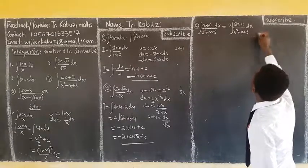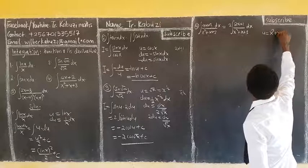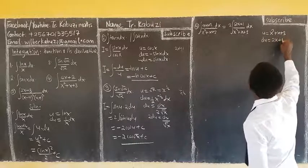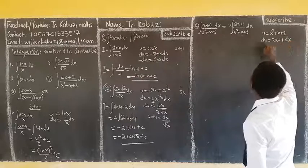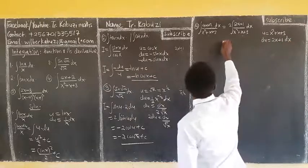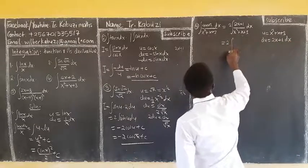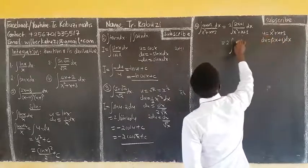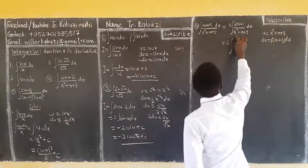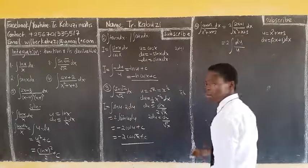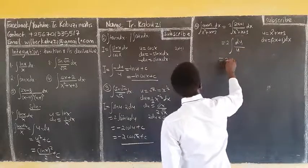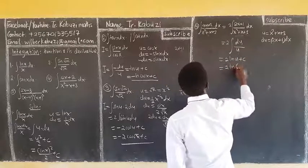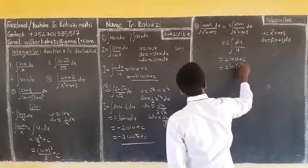So the integral becomes 2 times the integral of (2x + 1) over (x² + x + 3) dx. Let u equal x² + x + 3, so du equals (2x + 1) dx. The integral becomes 2 times the integral of du over u, which equals 2 ln|u| plus c. Substituting back, the answer is 2 ln|x² + x + 3| plus c.